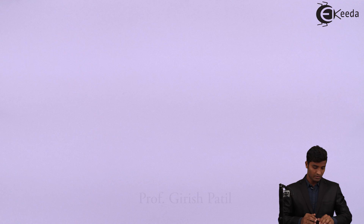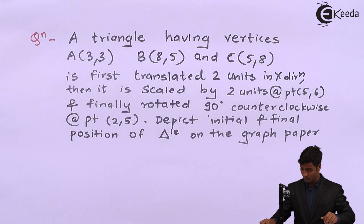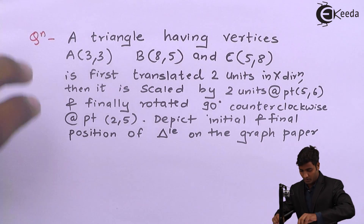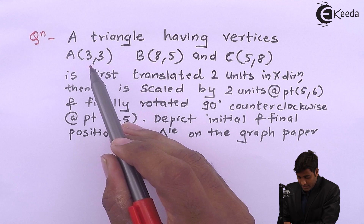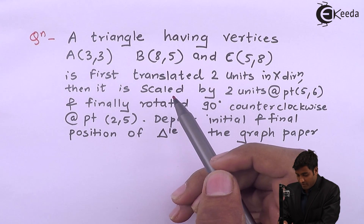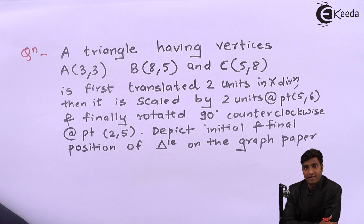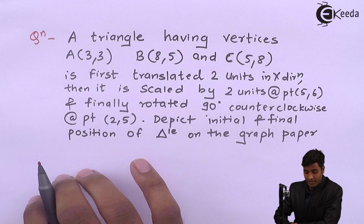Hello friends, today we will solve a problem related to scaling and rotating about an arbitrary point. Let's take the first problem: a triangle having vertices A(3,3), B(8,5), and C(5,8). A triangle has been given which has vertices A, B, C and their coordinates have been given.